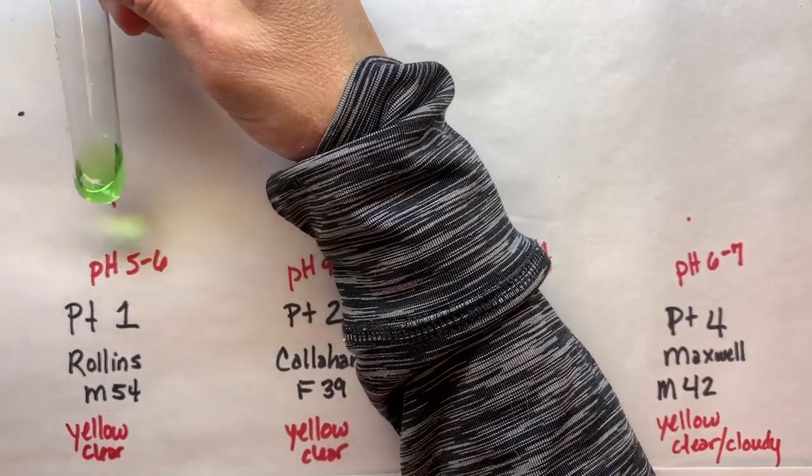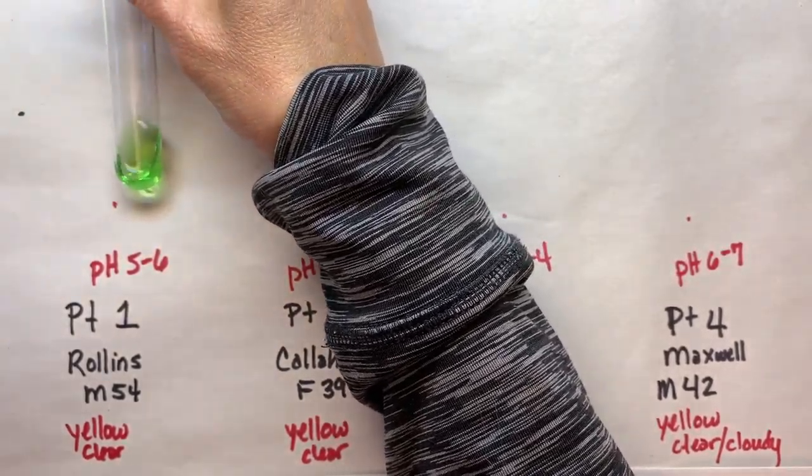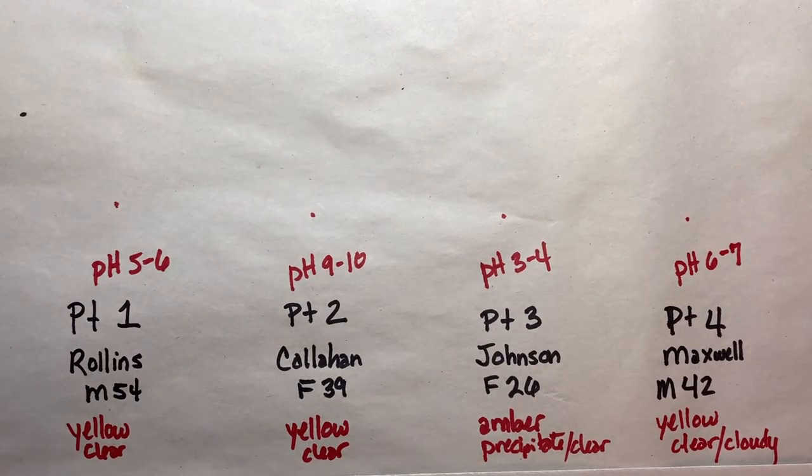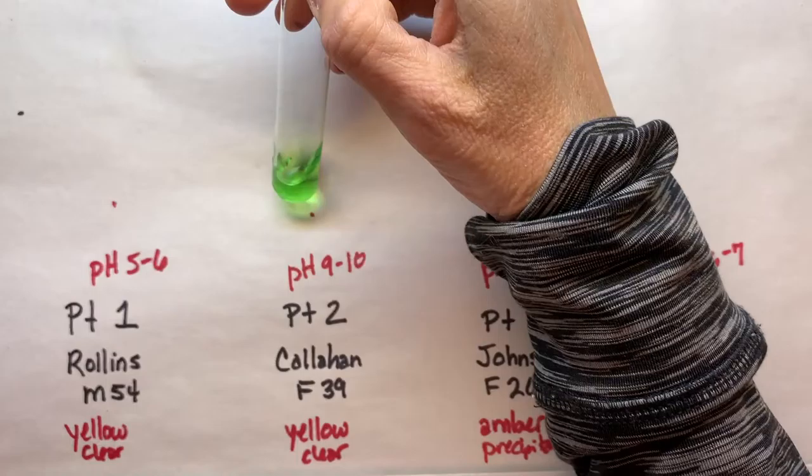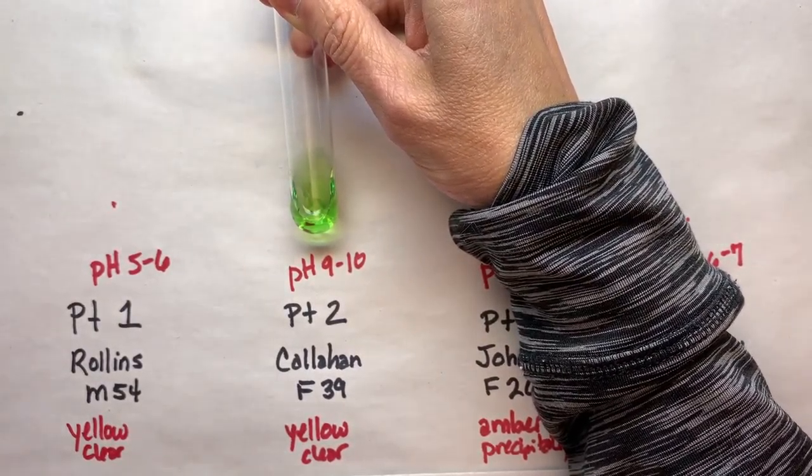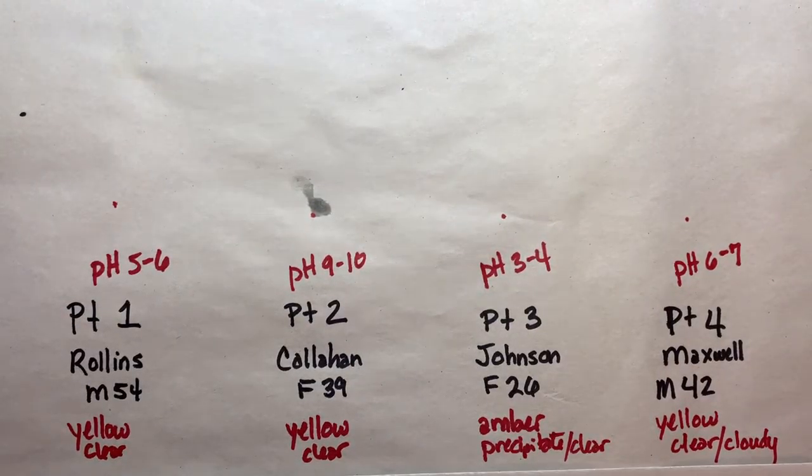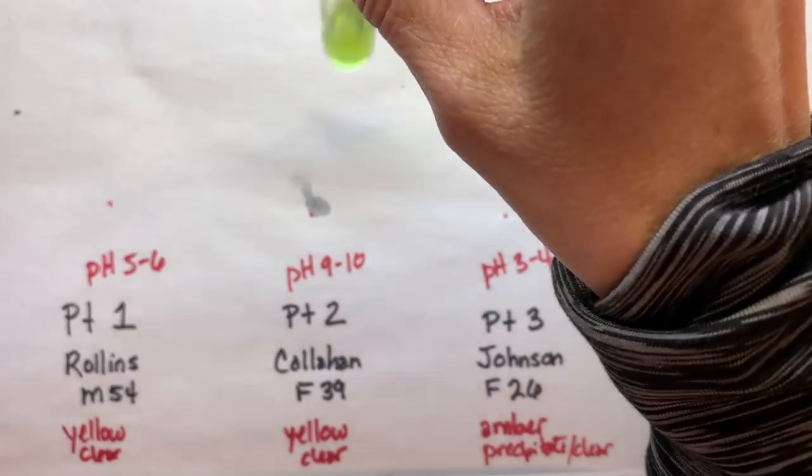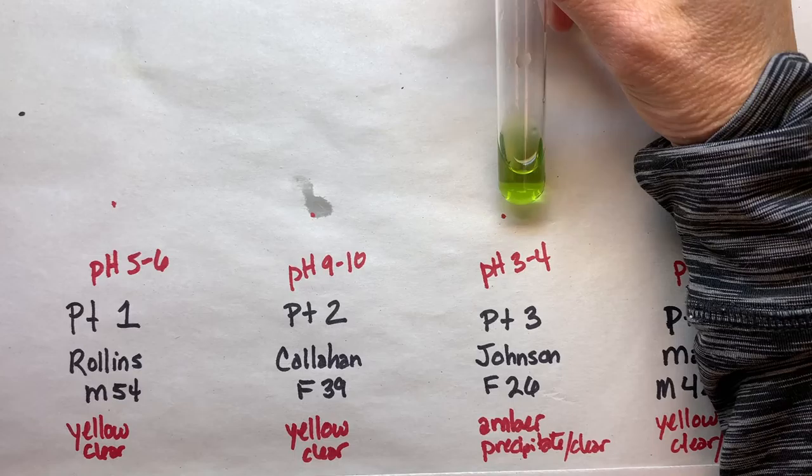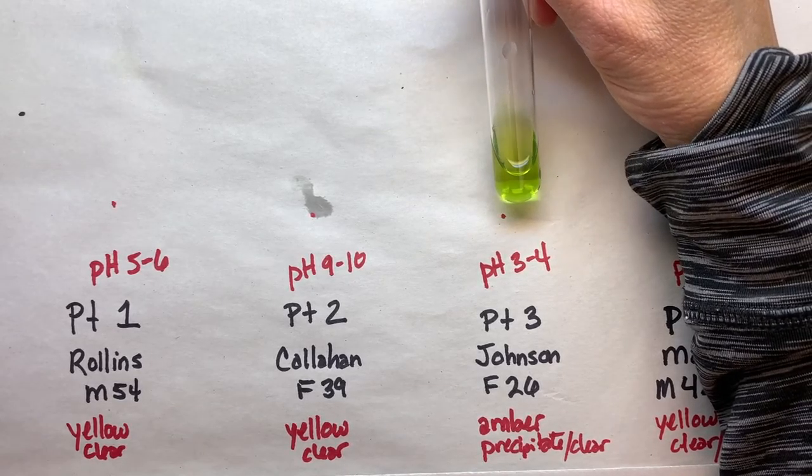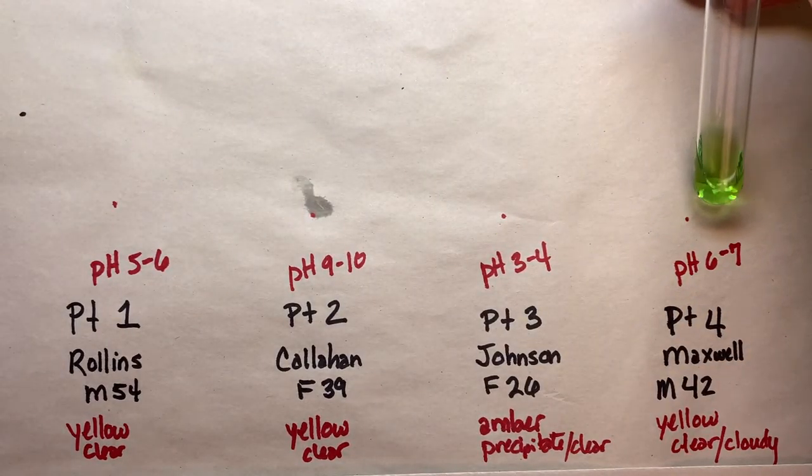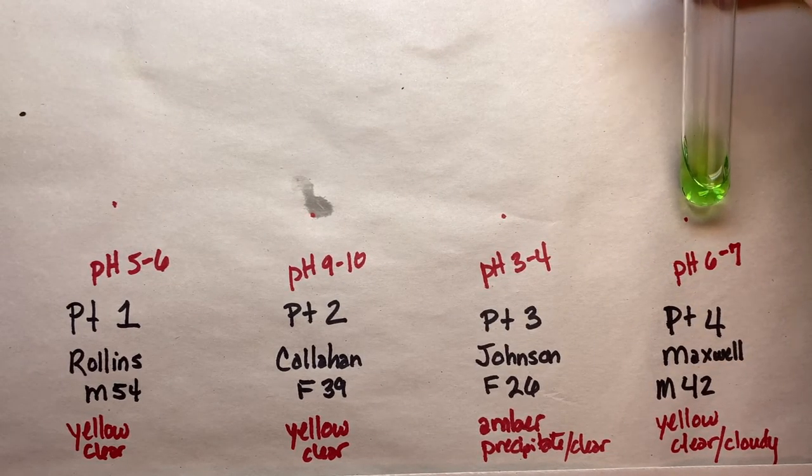Patient number one's urine is this nice green, here we can see that. Patient number two, again, green. Patient number three, I think that's about the same green, right? And then patient number four, again, a green.